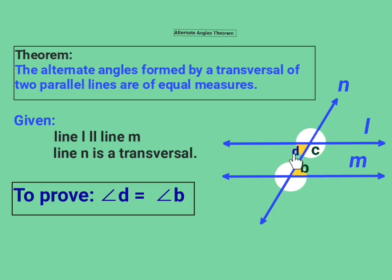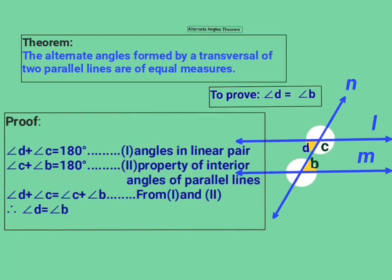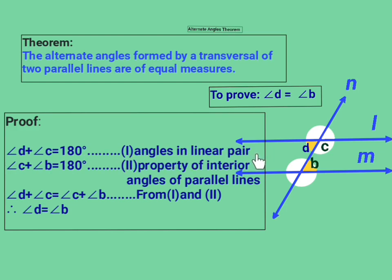We have to prove that angle D and angle B have the same measure. Let's start the proof. In this diagram, line L and line M are the parallel lines and N is their transversal. Angle D and angle C are a linear pair, so the sum of their measures is 180° — they are supplementary. So we can write angle D plus angle C equals 180°. This is equation number one, reason: angles in a linear pair.